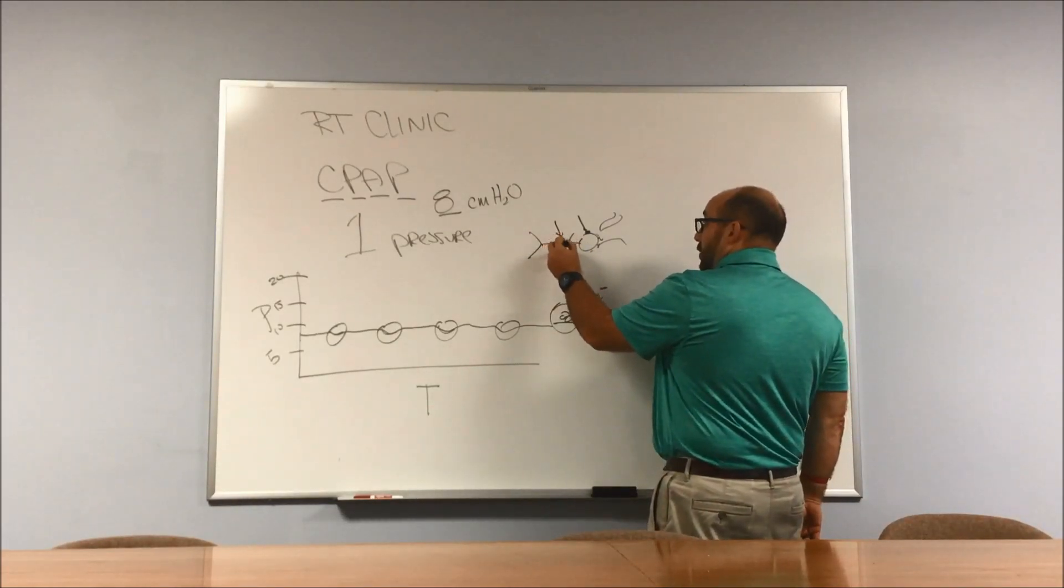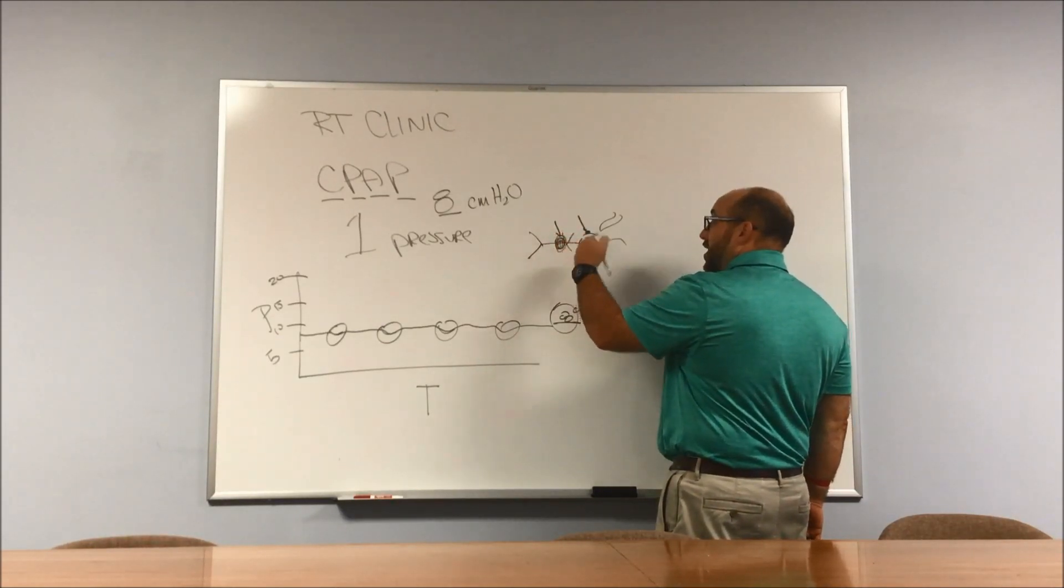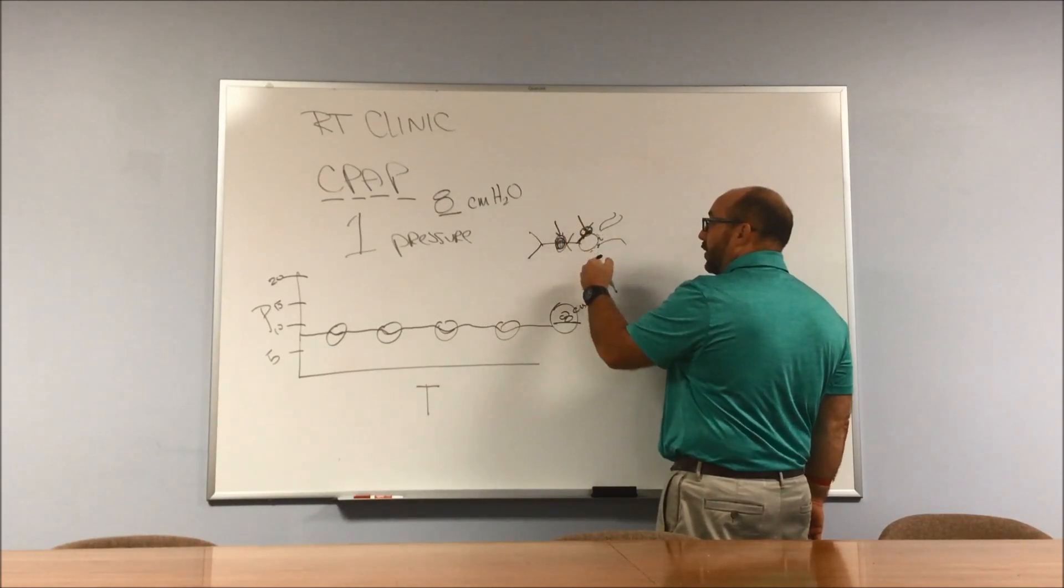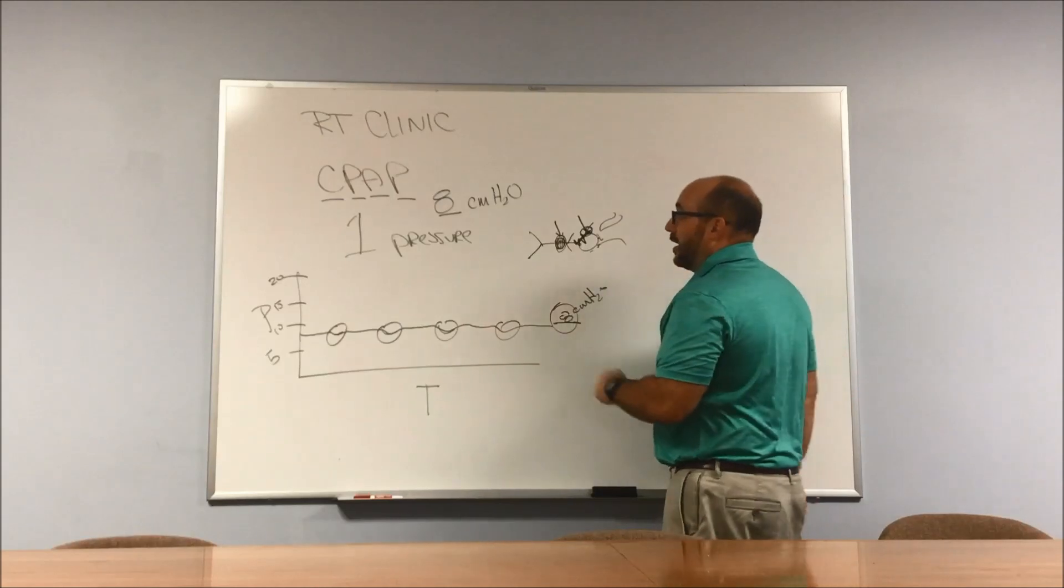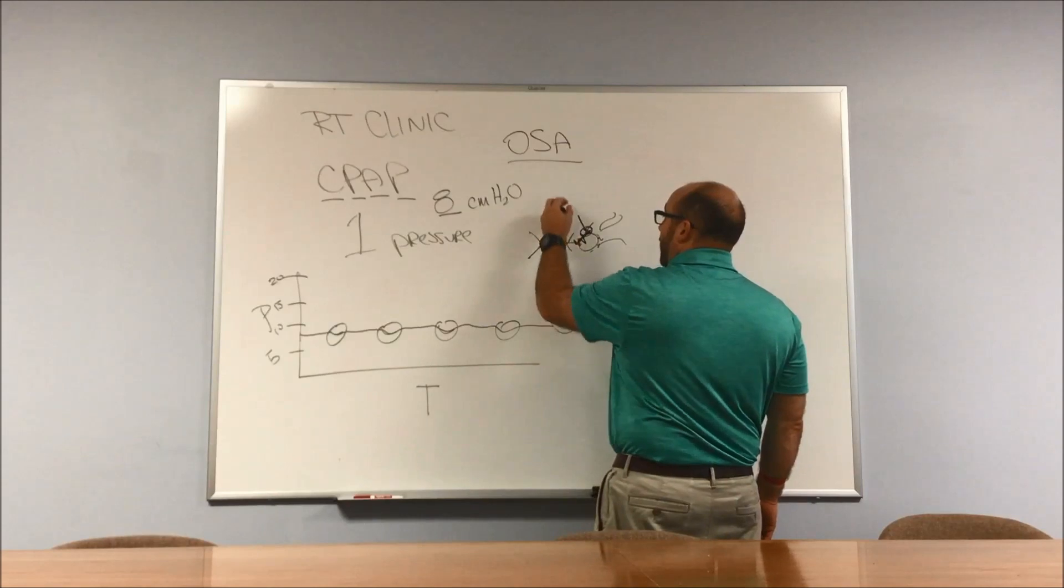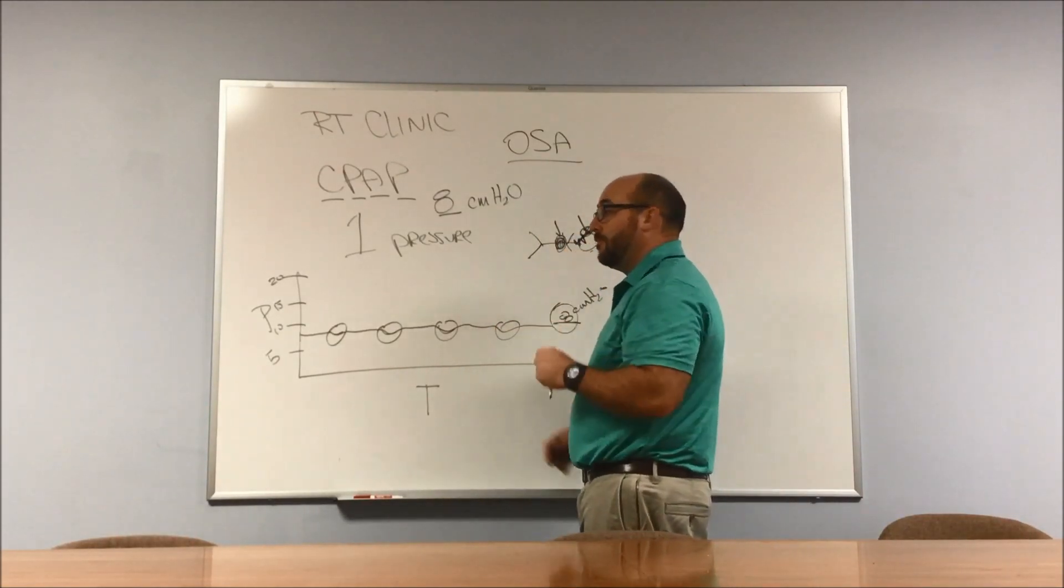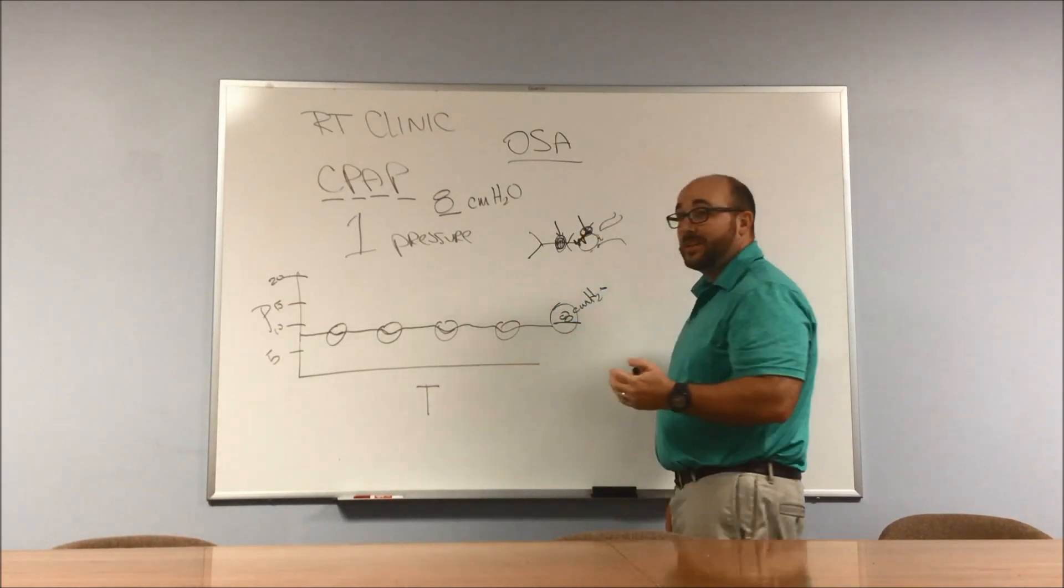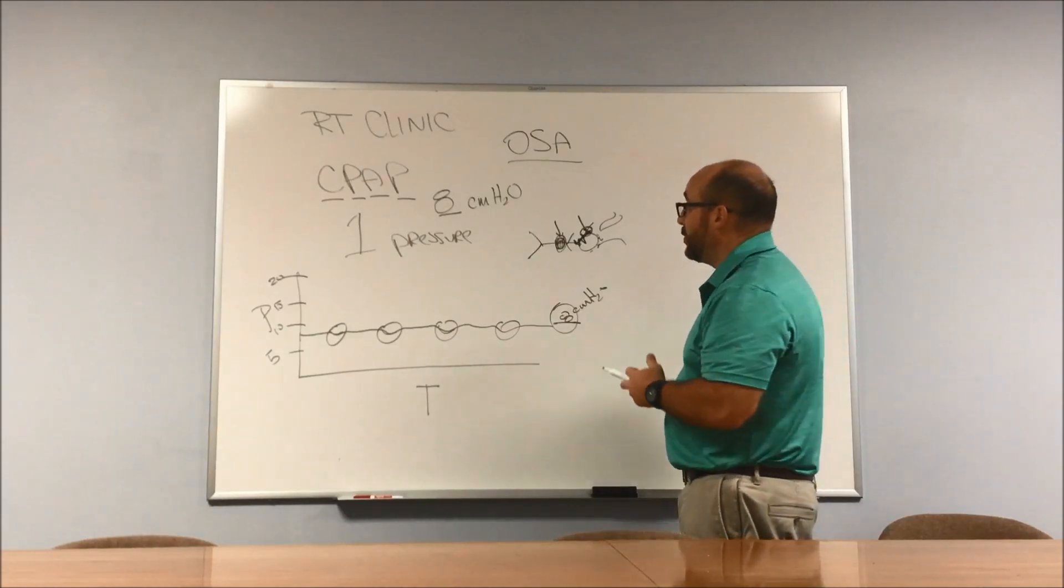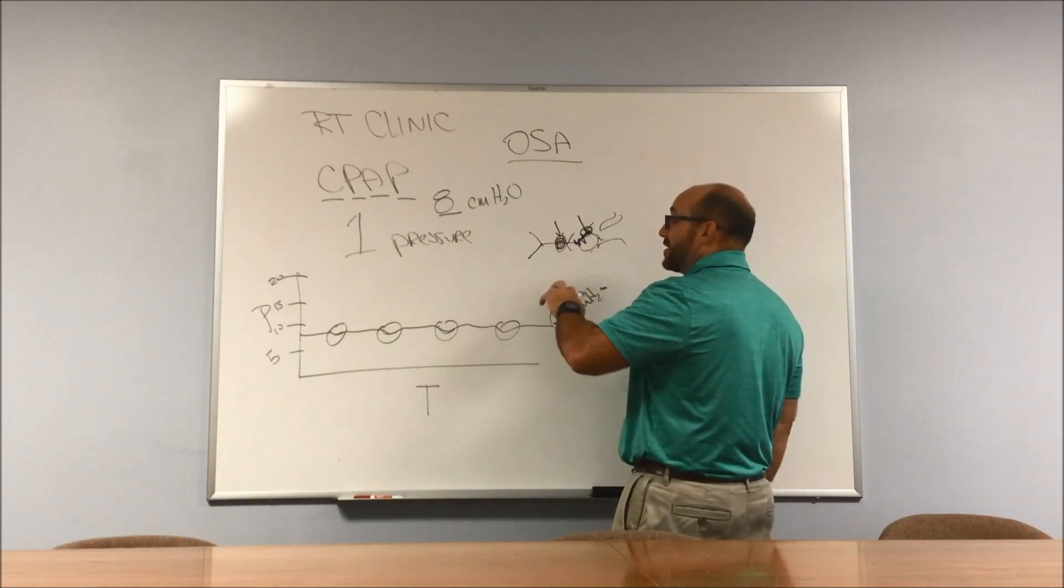Obstructive sleep apnea is when you're breathing normally, you have flow, and all of a sudden you continue to breathe here at your chest but the flow stops right here at the nose. So you lose the flow - there's an obstruction somewhere. We add flow, they may wake you up, put you on a CPAP, add flow in, and that's gonna splint your airway open. Everybody's settings a little bit different. A lot of times if you lose weight your settings may go down or you may not need CPAP anymore.